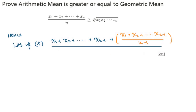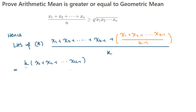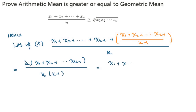Something really magical happens when you expand the fraction and collect like terms. Cancelling out the k's, you end up with (x₁ + x₂ + ⋯ + xₖ₋₁)/(k − 1).